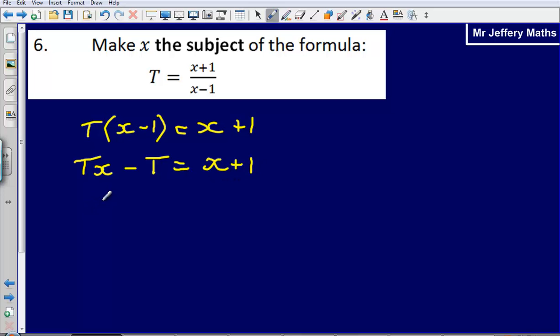Then I'm going to get all of my x terms on the same side. So I'm going to have Tx minus x is equal to T plus 1. So all I've done there is subtract an x from both sides and add a T to both sides. That's left me with all of my x's on the same side of the equal sign.